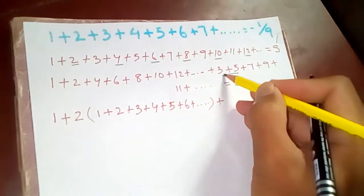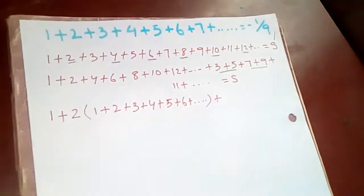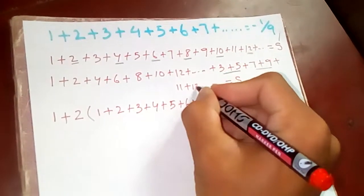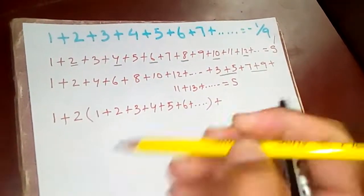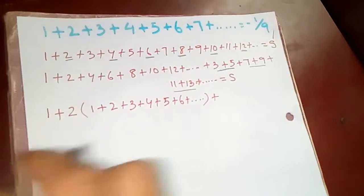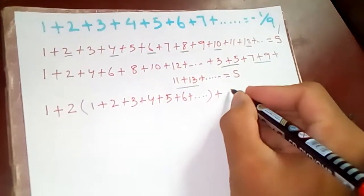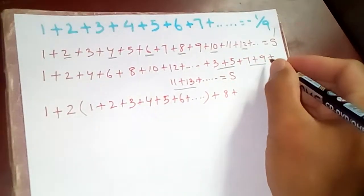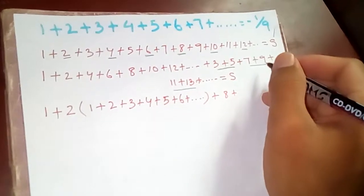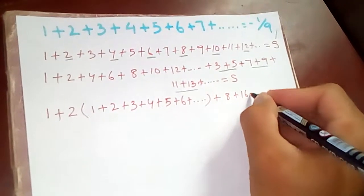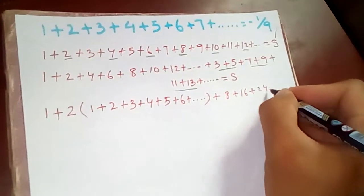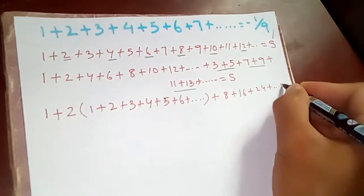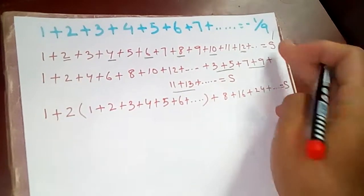We are going to add this. We are going to add this two, this two, eleven and next is what? Thirteen. Now if we add, three plus five is eight, seven plus nine is sixteen, eleven plus thirteen is twenty-four and so on. This is nothing but our S, still the same.